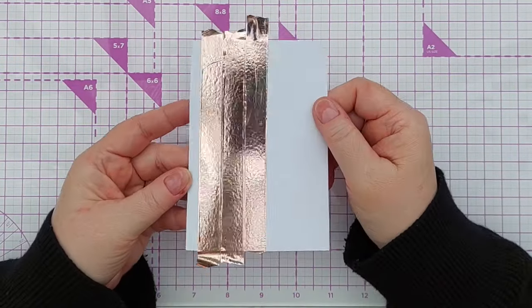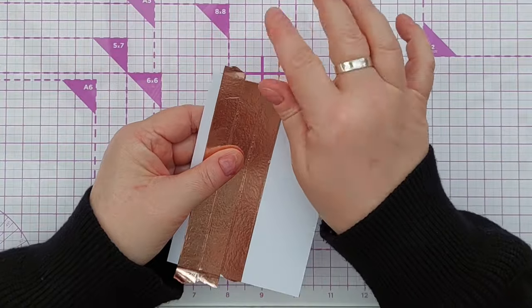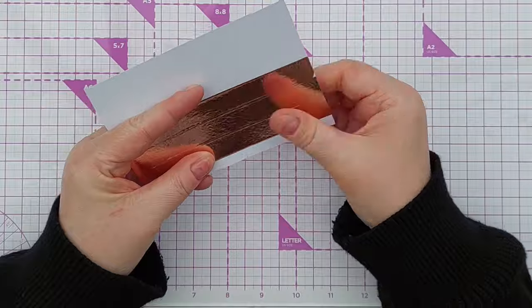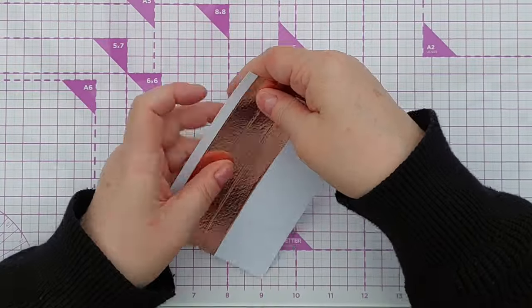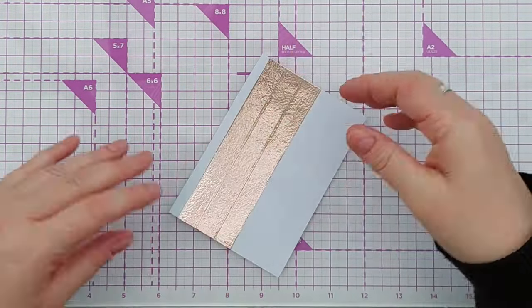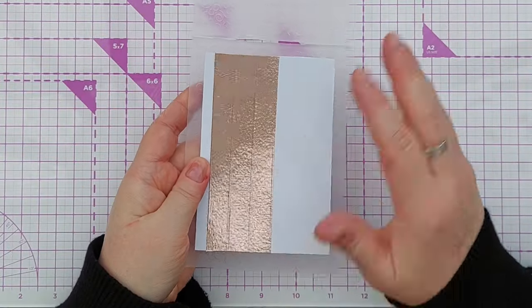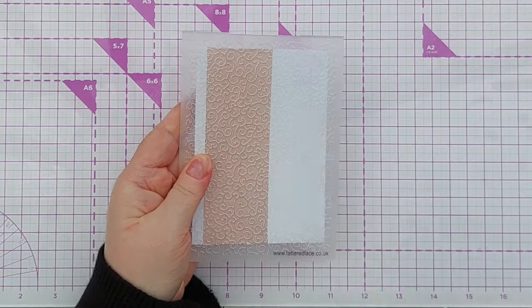So I needed three strips of washi tape to cover the area that I wanted to cover. If you've got wide washi tape that's even better because you only need to put down maybe one or two strips and now I'm going to run this through my die cutting machine with this embossing folder.